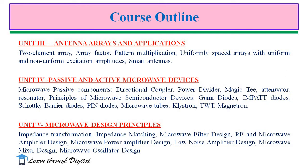In units 4 and 5, we will discuss microwave components and devices. In unit 4, we shall discuss microwave devices for both active and passive categories. In unit 5, we will discuss amplifiers, oscillators, and mixers. These are the topics under the course Antennas and Microwave Engineering. The first three units cover topics related to antennas, and the remaining two units cover topics related to microwave engineering.